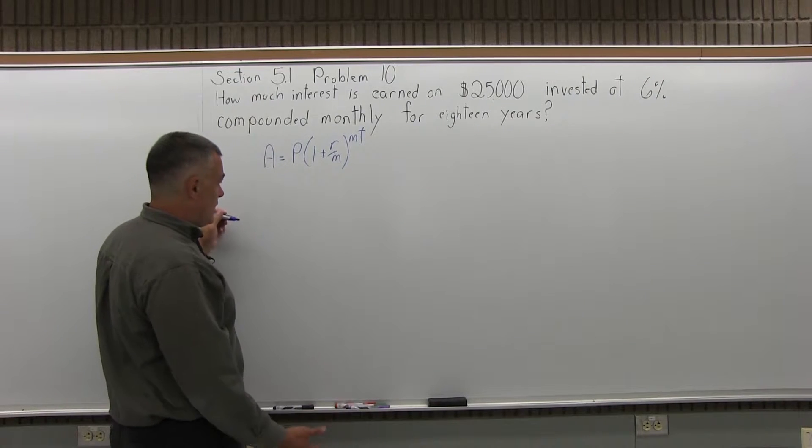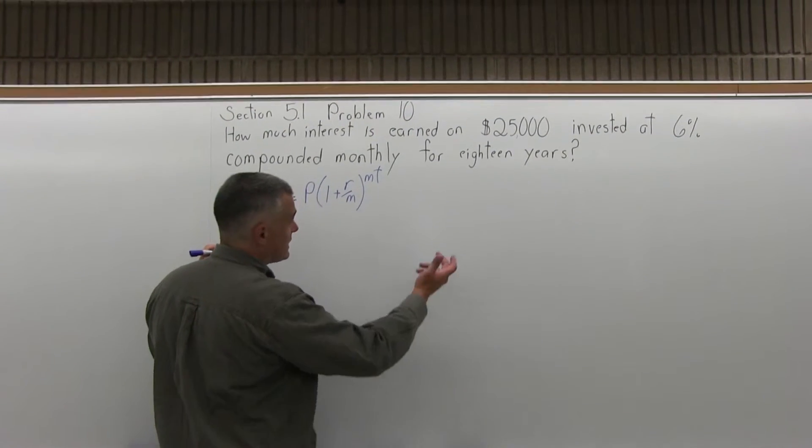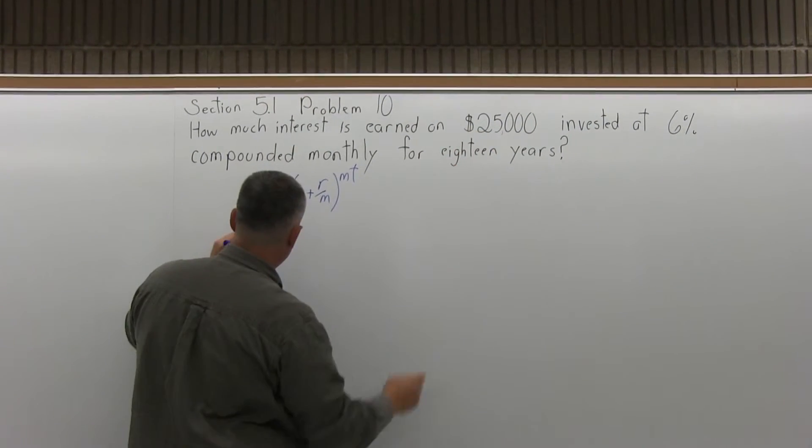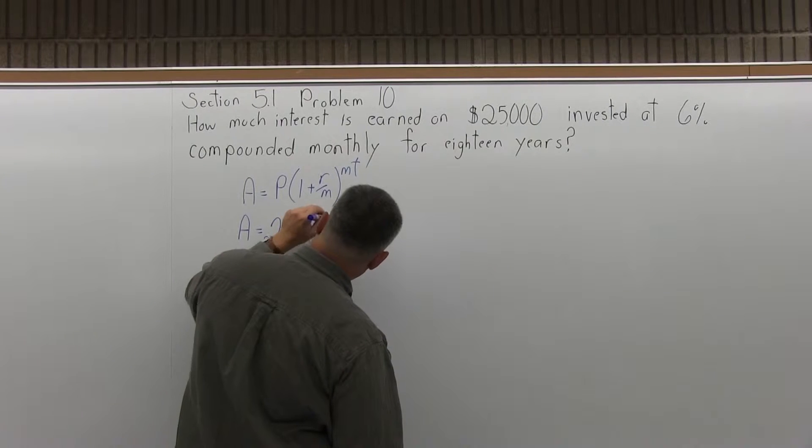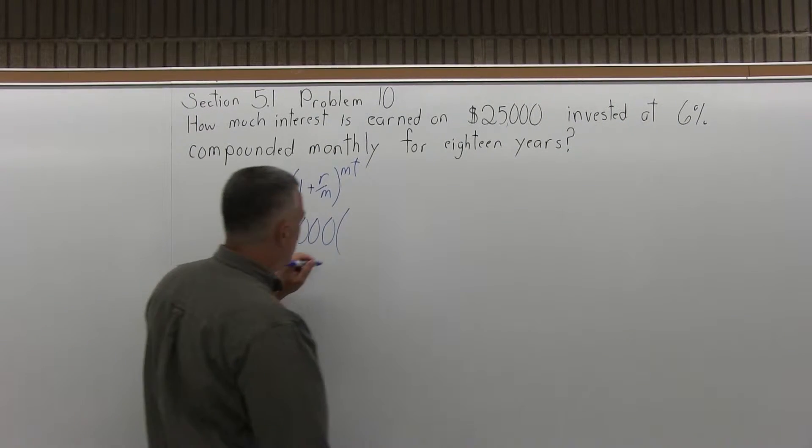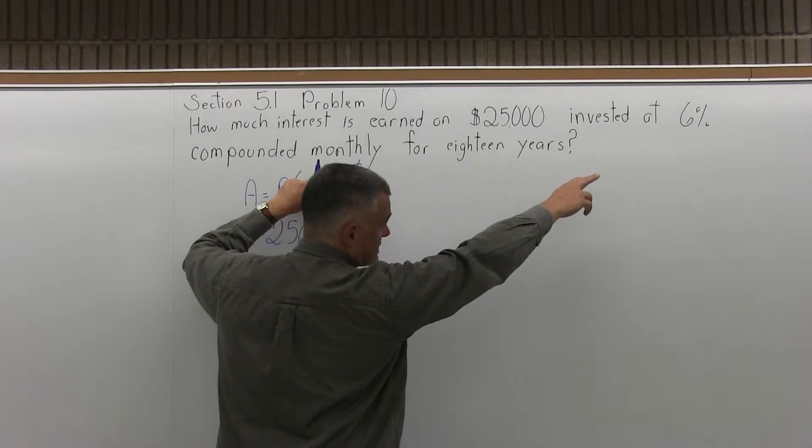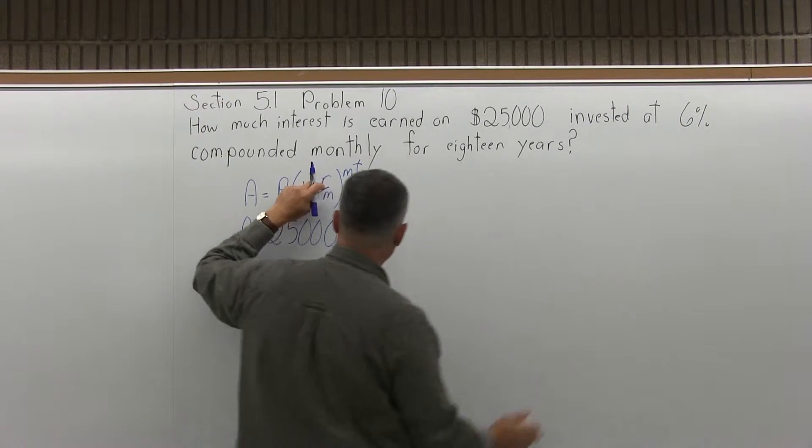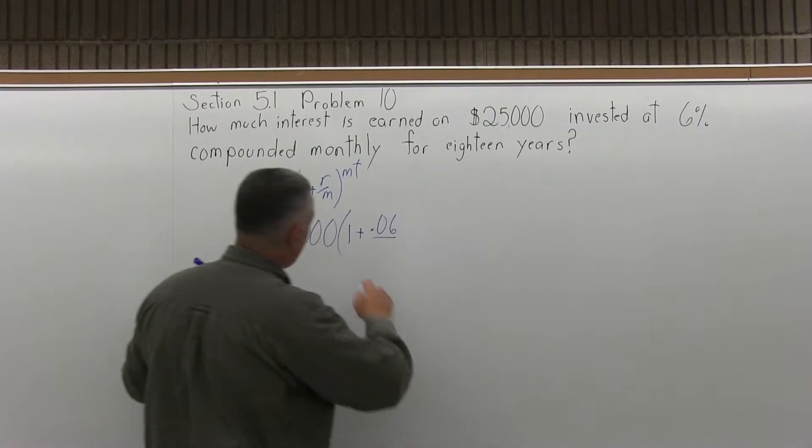A, the final amount, is the unknown, so I'll leave that as just A, a variable. P is the initial investment or principal, which is $25,000. So that's going to be what I start with, times some parentheses. In the parentheses, I have 1 plus R, the rate as a decimal. So 6% is my rate, and as a decimal that would be written 0.06 over M.